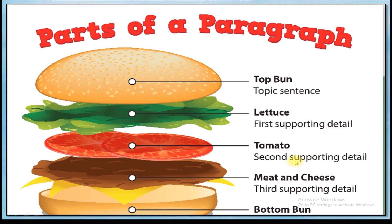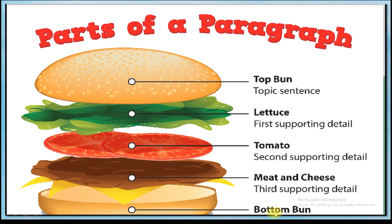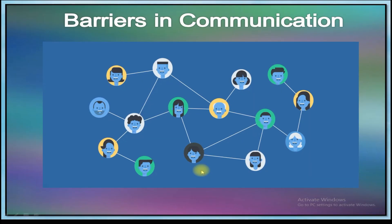Supporting sentence two gives another specific detail relating to the main idea. Supporting sentence three gives more specific details relating to the main idea. The last one at the bottom is the concluding sentence — it refers to the topic sentence and sums up the main idea of the paragraph.